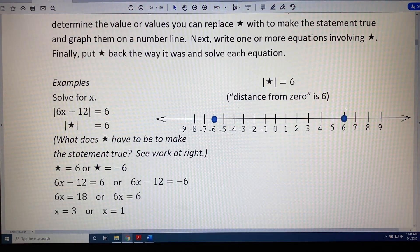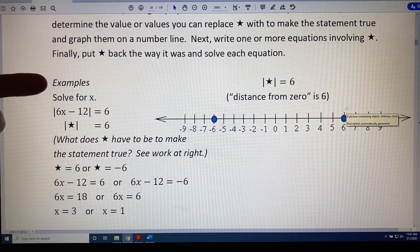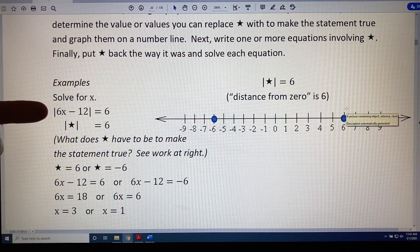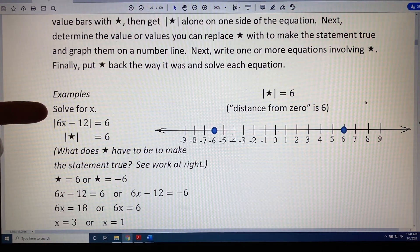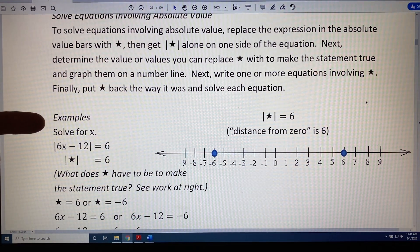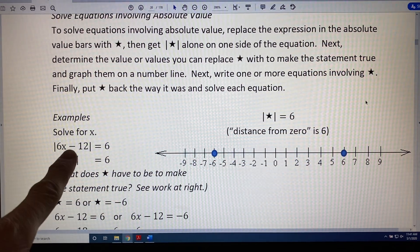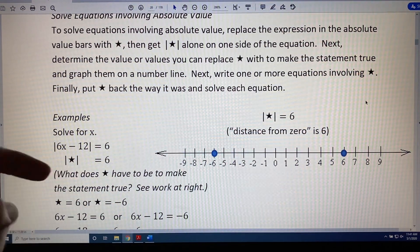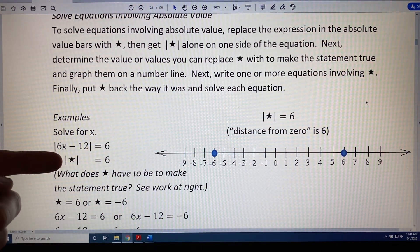Let's look at an example. Solve for x: the absolute value of 6x minus 12 equals 6. Okay, let's go through the steps together. The first step is to replace the expression in the absolute value bars, 6x minus 12, with star. So we have the absolute value of star equals 6.